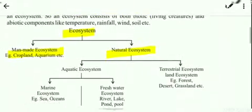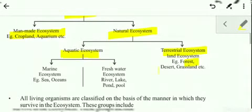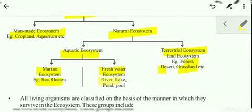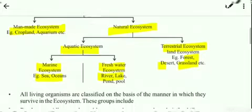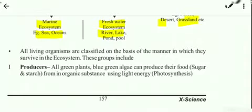Natural ecosystems can further be aquatic or terrestrial. Terrestrial means land. Examples of terrestrial or land ecosystems are forest, desert, and grassland. Examples of aquatic ecosystems include marine, that is sea and oceans, and freshwater, that is rivers, lakes, ponds, etc.